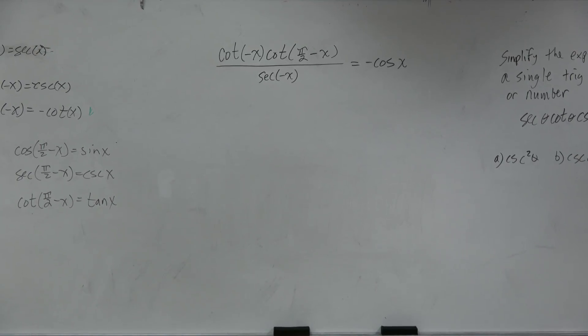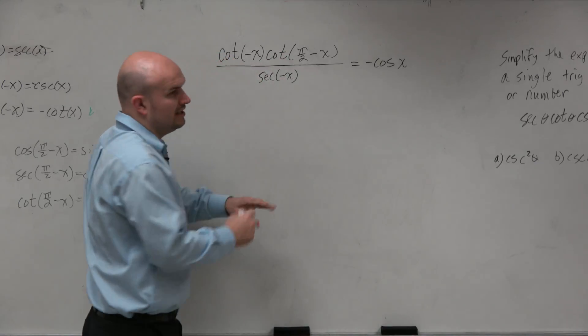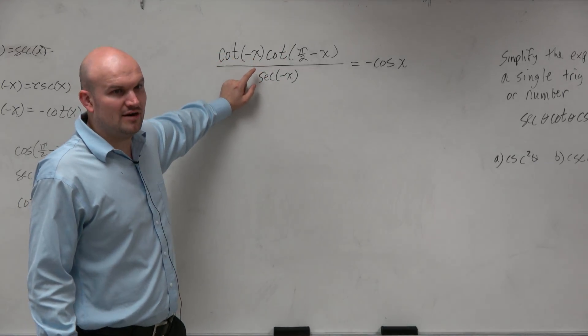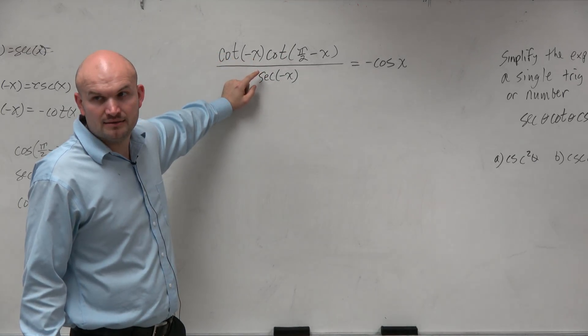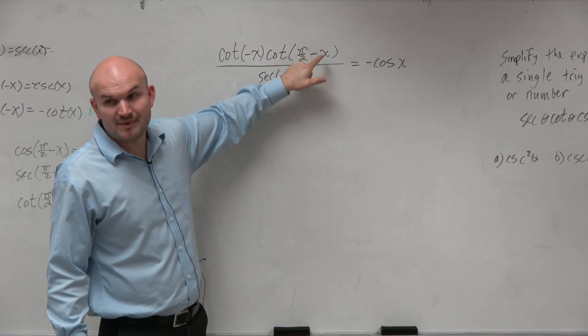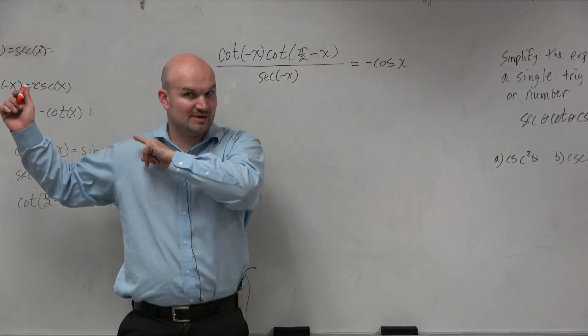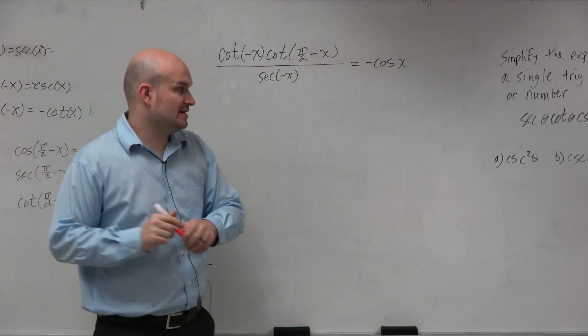We have some identities, some things going on. So if we look at this, anytime I see a trig of a negative angle, I'm thinking of using my even-odd identities. And then anytime I see this pi half minus x, I automatically think co-function identities. They're right behind me, but you need to make sure that you know.